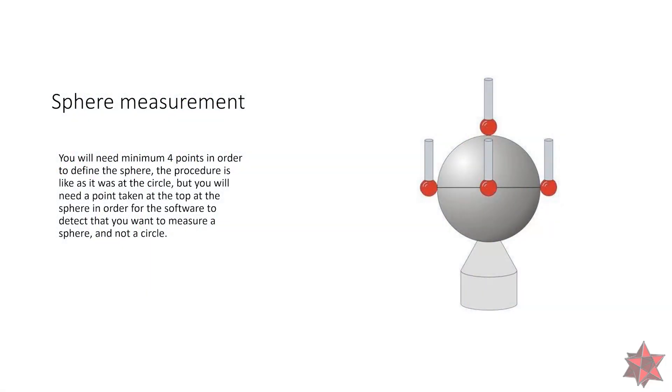The sphere measurement. You will need a minimum of 4 points in order to define the sphere. The procedure is like it is at a circle, but you will need a point taken at the top of the sphere in order for the software to detect that you want to measure a sphere and not a circle.